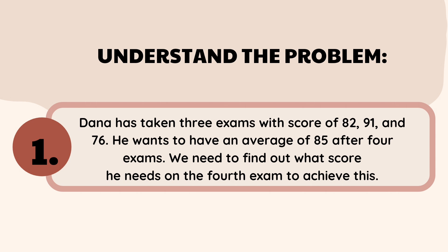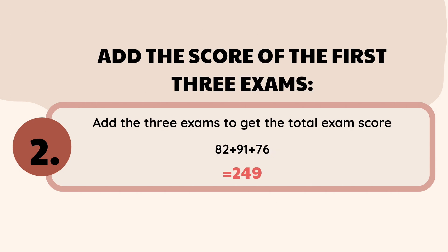As we understand the problem, we move to the second step: add the scores of the first three exams. We are going to use the operation of addition. Add the three exam scores of Dana — 82, 91, and 76 — and the total is 249. Remember this number carefully, as we are going to use it in the next steps.